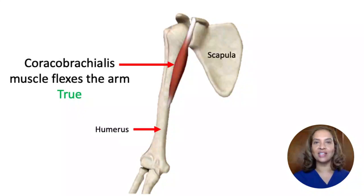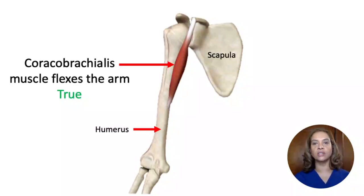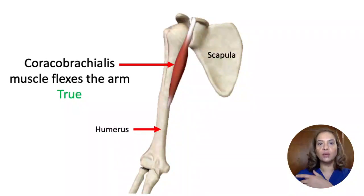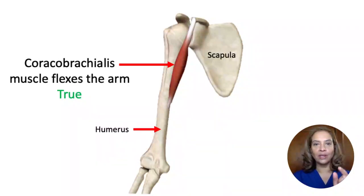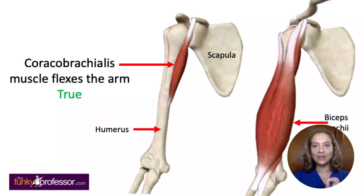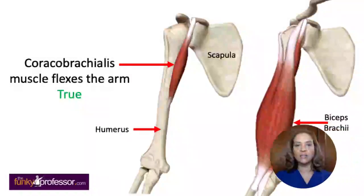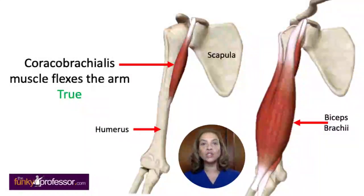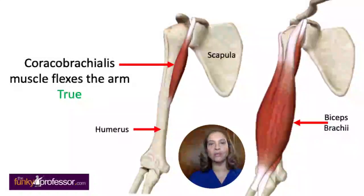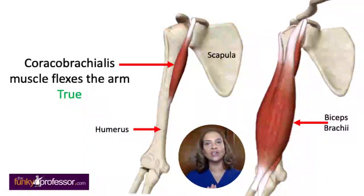The coracobrachialis, as the name suggests, takes its origin from the coracoid process of the scapula, and you can see it here in this diagram attaching distally on the anterior medial shaft of the upper part of the humerus bone. If that muscle were to shorten, it would bring the humerus forward, which is flexion of the arm. The coracobrachialis arises in common with the short head of the biceps brachii, both attaching from the coracoid process.